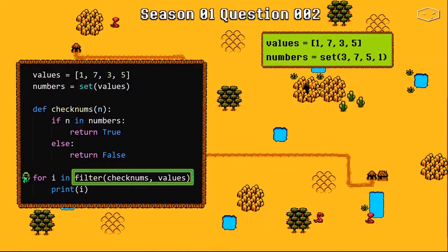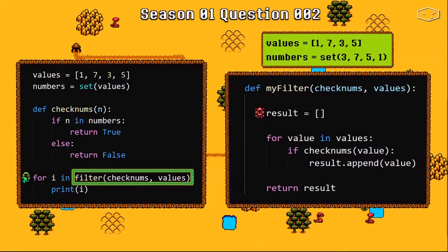This is equivalent of having this code. It will start by creating an empty list and then for each value in values it will pass each value one by one to the check numbers function and it will check if the number exists in the numbers set.